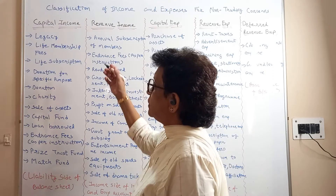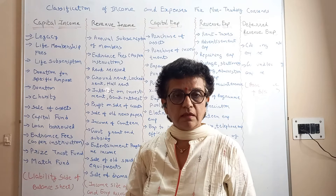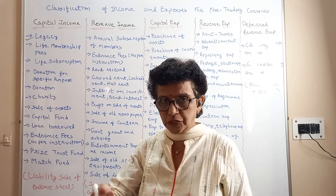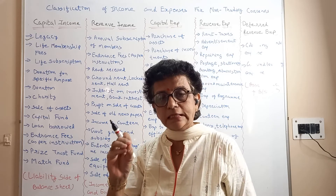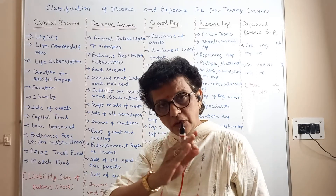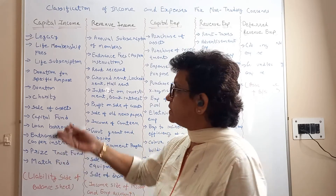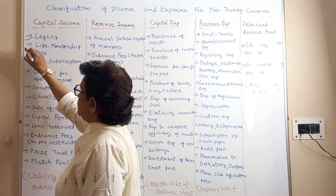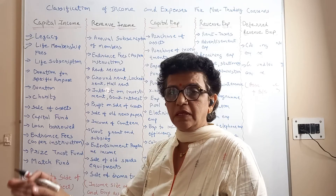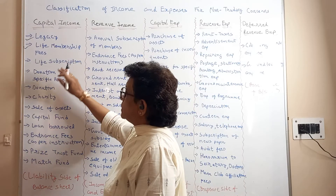So which can be your capital income? The very first is legacy. What does legacy mean? Legacy means after the death of a person, according to his wish, if he has stated that a certain amount is to be given to a particular charitable trust, then because of his death and his declaration, whatever amount you receive is a legacy. Life membership fees — normally a member pays fees annually, but if someone says they want to pay for their whole life, that goes to capital income.